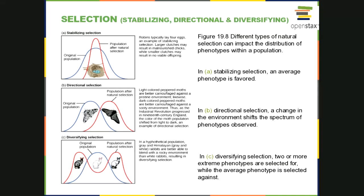Here are examples of the three types. Stabilizing selection — using robins and the number of eggs in their clutch — moves the distribution toward the mean or middle value. If the clutch gets too large there's not enough food for all the chicks, but in smaller clutches the one or two chicks may not survive either, so there's a happy medium.